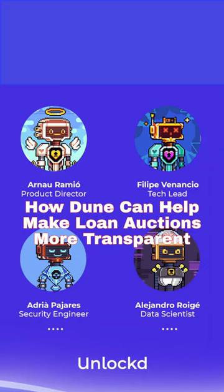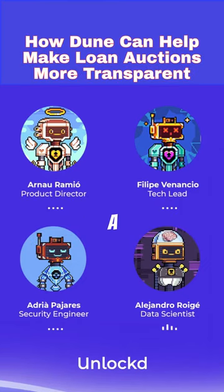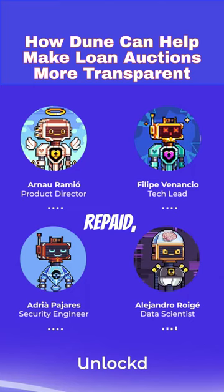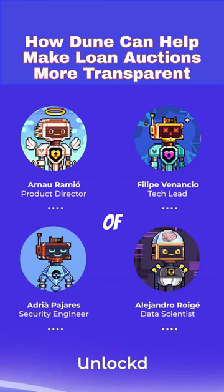In the future, when we are launched on Mainnet already, we will add a Dune dashboard so everyone can see transparently what is happening inside the protocol — which loans are being repaid, which are on auction, and everything. So everyone at any time can see what is happening on the protocol. Just so you know, some of you have asked about that on the channel — yes, you will have that information available for everyone at any time.